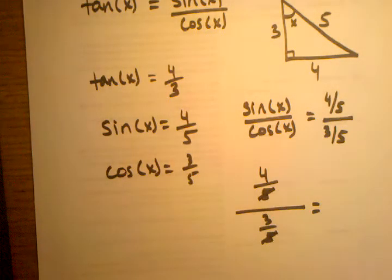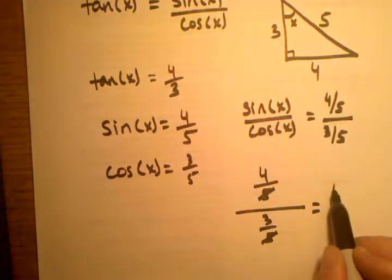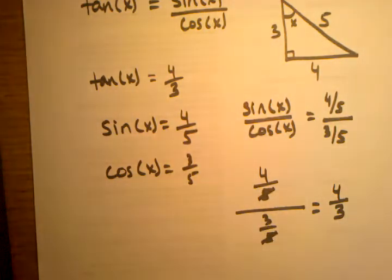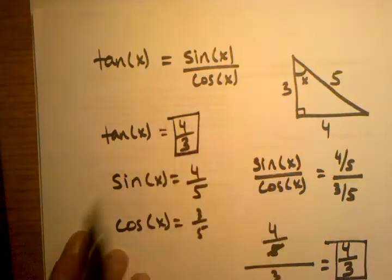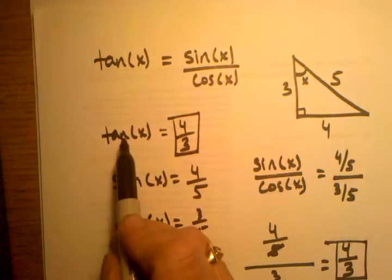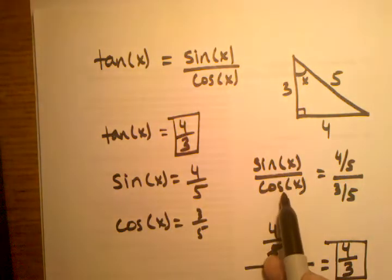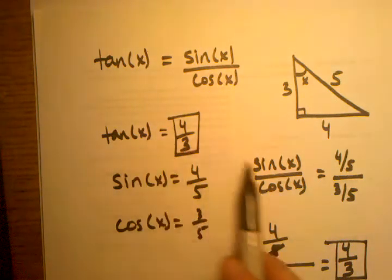When you solve four-fifths over three-fifths algebraically, the fifths in the denominators cancel out and you end up with four-thirds. Four-fifths divided by three-fifths does indeed equal four-thirds. Interestingly, four-thirds is the exact same value as tangent of x. So when we took sine x divided by cosine x, we again ended up with four-thirds — proving that these two are equivalent.